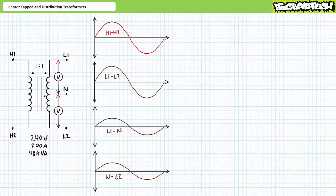this would result in three possible outputs: L1 to L2 with a 240 volt differential, L1 to N at 120 volts, and N to L2 at 120 volts — all in phase with one another. This should be a review of the contents we previously discussed in the Transformer Connection Diagrams lecture.